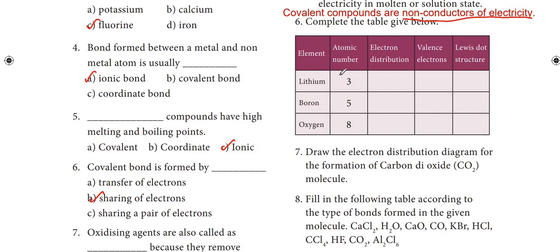Complete the table. First, lithium with atomic number 3: its electron configuration is 1s2, 2s1, and it has 1 valence electron. The Lewis dot structure for lithium shows Li with 1 dot representing 1 valence electron.